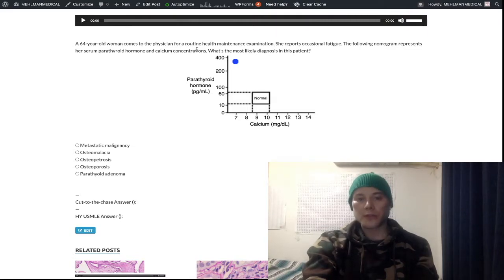Okay, so we have a 64-year-old woman and she reports occasional fatigue. We see this nomogram where parathyroid hormone is on the y-axis, calcium on the x-axis, and you can see that parathyroid hormone is high, calcium is low. Normally calcium is 8.4 to 10.2, so we can see the calcium is around 7 milligrams per deciliter, and once again parathyroid hormone is high.